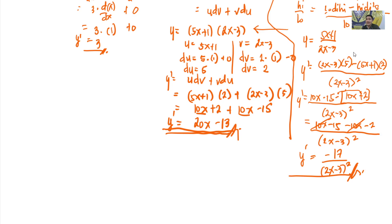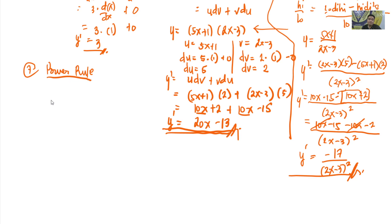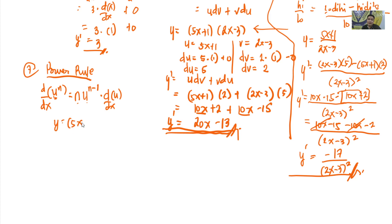The last important rule is the Power Rule. The derivative of u raised to n with respect to x: bring down the exponent n, copy the base u, subtract 1 from the exponent to get n−1, then multiply by the derivative of the function with respect to x. For example, y = (5x + 1) raised to 3.